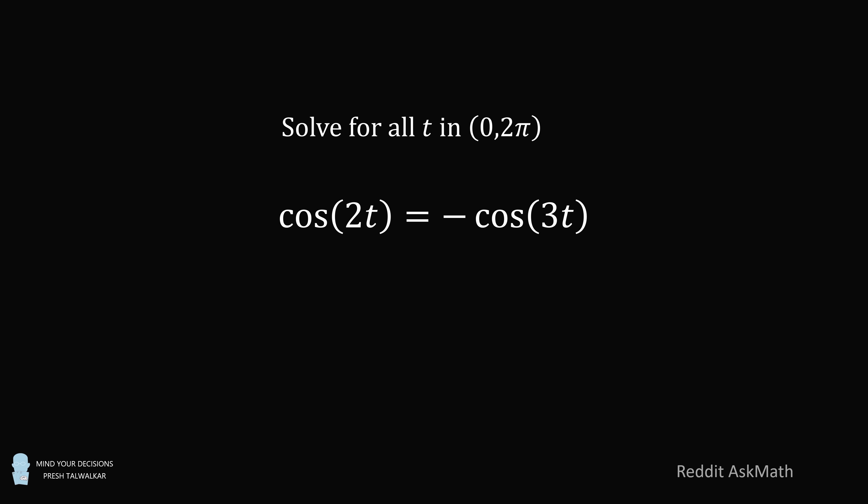Hey, this is Presh Talwalkar. Here's a fun little problem I saw on Reddit Ask Math. Solve for all t between 0 and 2 pi such that cosine of 2t is equal to negative cosine of 3t. Pause the video if you'd like to give this problem a try, and when you're ready, keep watching to learn how to solve this problem.